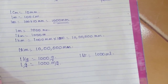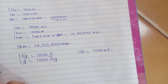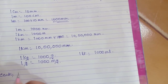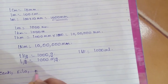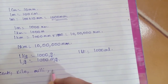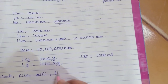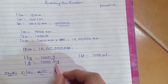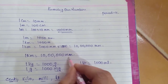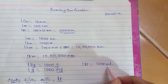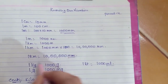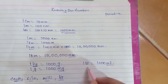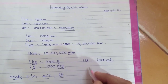We have seen the common prefixes used here: centi, kilo, milli, and litre. These are the common four terms we are using everywhere — milligrams, millimetres, millilitres, kilograms, kilometres, litres, and kilolitres.